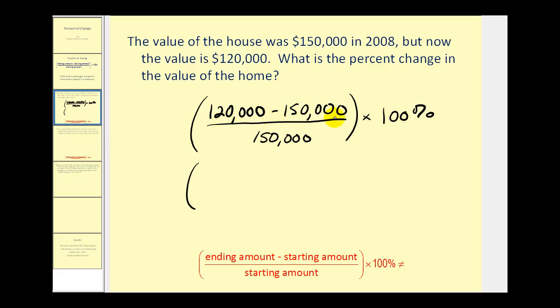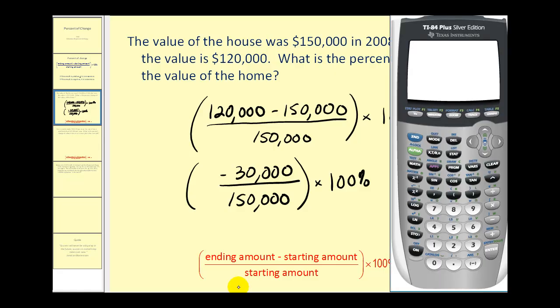$120,000 minus $150,000 is negative $30,000 divided by $150,000 times 100 percent. Let's use our calculator on this. Negative 30,000 divided by 150,000 equals negative 0.2.